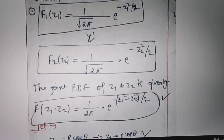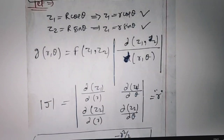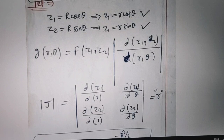Now we have to generate some formula for z1 and z2. So in the next step I have written that z1 is equal to r·cosθ and z2 is equal to r·sinθ.